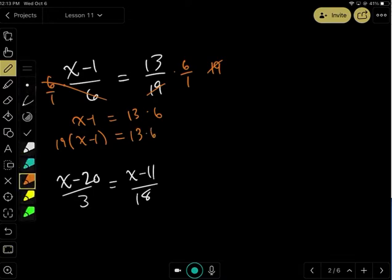What we really want to do is what's called the cross product. We want to take 6 and multiply it by 13, and take 19 and multiply it by that quantity. This saves us two steps. So this cross product would be 19 times the quantity x minus 1 is equal to 13 times 6.